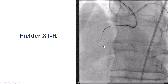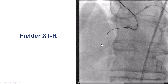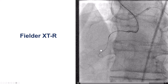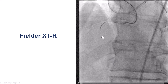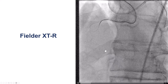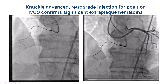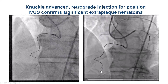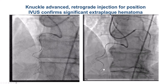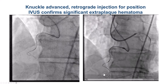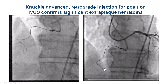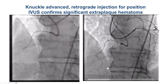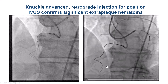Eventually we took the Fielder XTR and knuckled it, then advanced the knuckle along the area of tortuosity in the mid-RCA as we had seen with the coronary CT angiogram. There is where the wire is going, and it looks like we were in the distal RCA past the bend in the mid-RCA, although this didn't look perfect in terms of the location of the lesion.